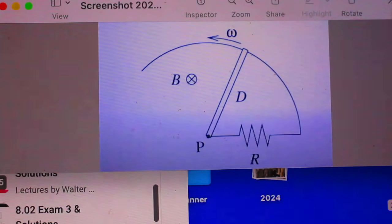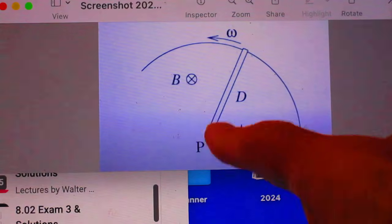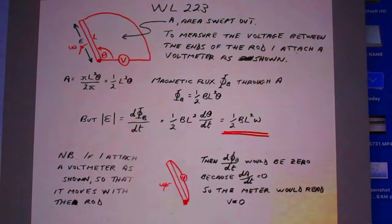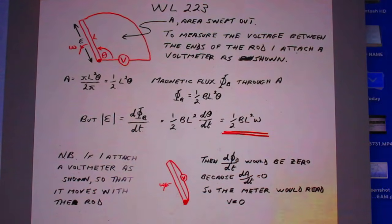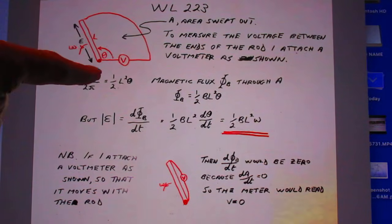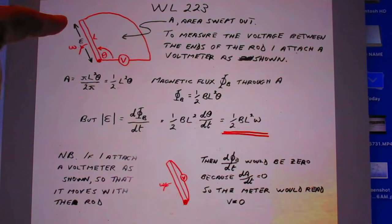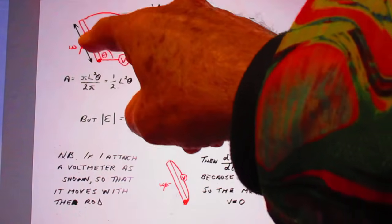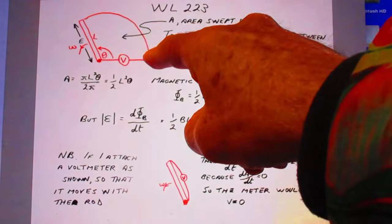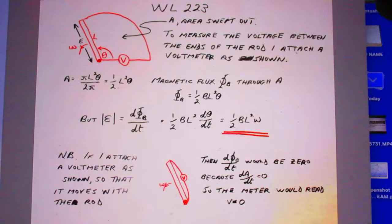So let's now go to Eugen's solutions where he calculates the potential difference between here and there. So here you see Eugen's solutions. Walter Lewin, problem 223. So you see what I just told you. You see the rod here, angular velocity omega. And he measures the potential difference between this point and this point by simply putting a voltmeter in here with a huge resistance.